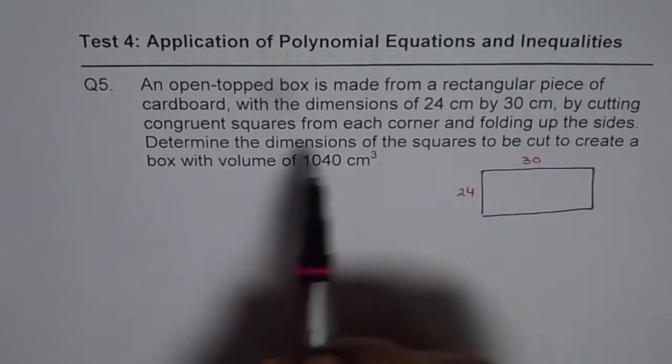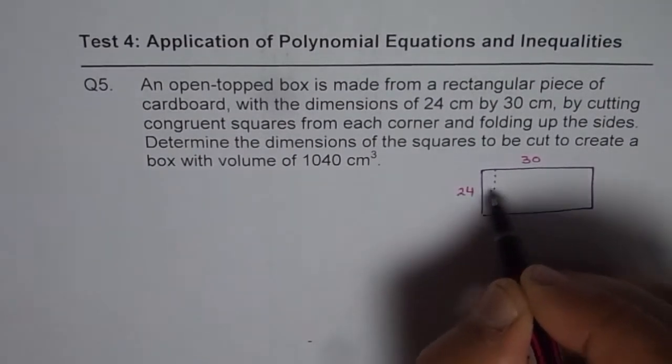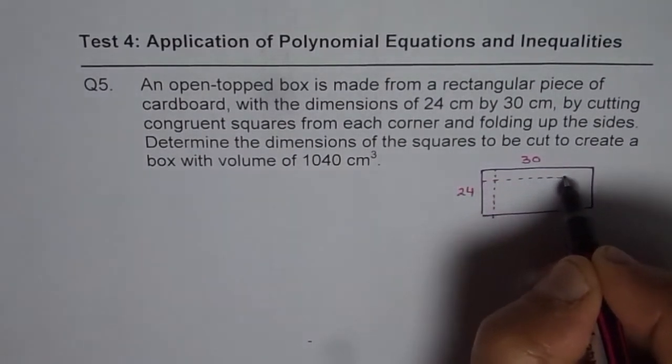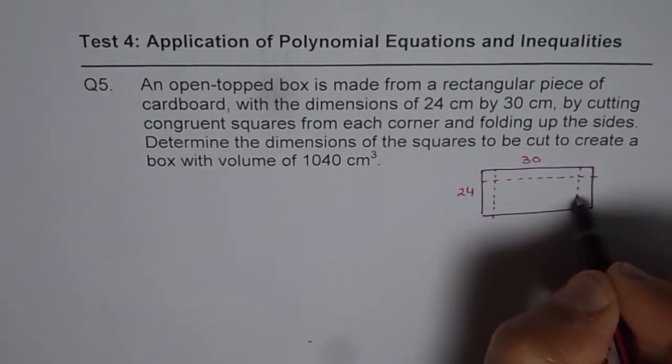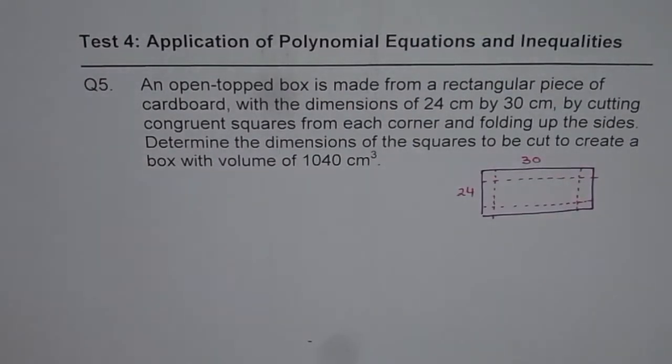Now, congruent squares are cut from each corner. So, let me just draw these dotted lines indicating that the squares are cut from the corner and then, of course, you fold them to make open top box.